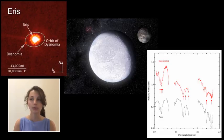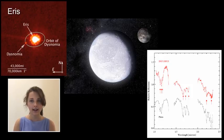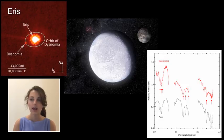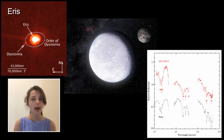Eris is the most massive and the furthest dwarf planet discovered from the Sun. Eris is a trans-Neptunian object and a scattered disk object, meaning it has an extremely high orbital eccentricity and likely formed nearer to the Sun and was gravitationally ejected by the gas giant planets. Eris's surface is thought to be similar to Pluto's, with large amounts of methane ice but without organic compounds, so it appears more white instead of red.